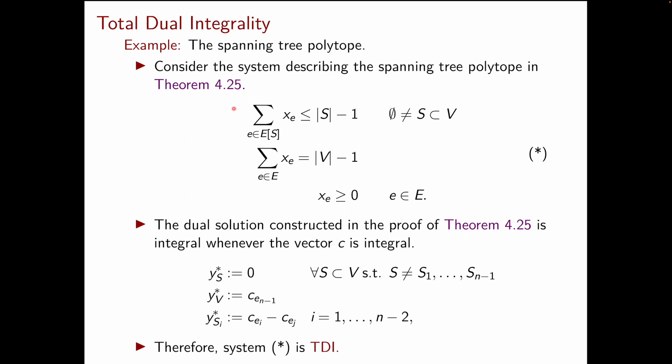In theorem 4.25, we showed that the spanning tree polytope is described by this system of linear inequalities. Now, how did we prove this? In our proof we used Kruskal's algorithm to come up with an optimal solution to the linear program associated with the system of linear inequalities, and such a solution was the characteristic vector of a maximum spanning tree. But how did we show that the solution given by Kruskal's algorithm was indeed optimal for this linear program? Well, what we did is the following.